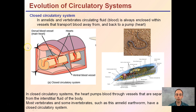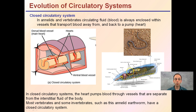Closed circulatory systems, such as those in annelids and vertebrates, have circulating fluid — blood — that is always enclosed within vessels. That's the definition of what makes it closed. This transports blood away from and back to a pump, in this case the heart. The heart pumps blood through vessels that are separated from the interstitial fluid of the body, so it's not only organized with vessels but there's also a clear separation.